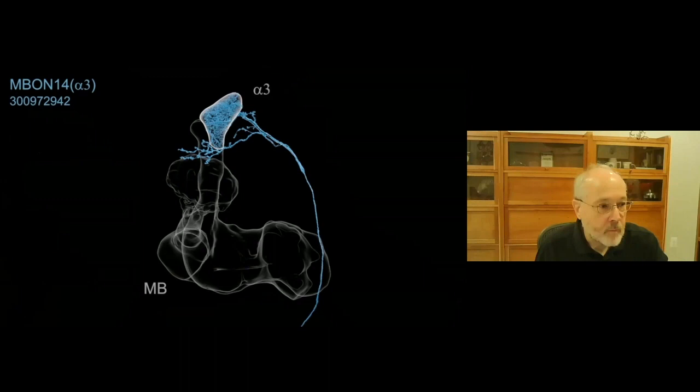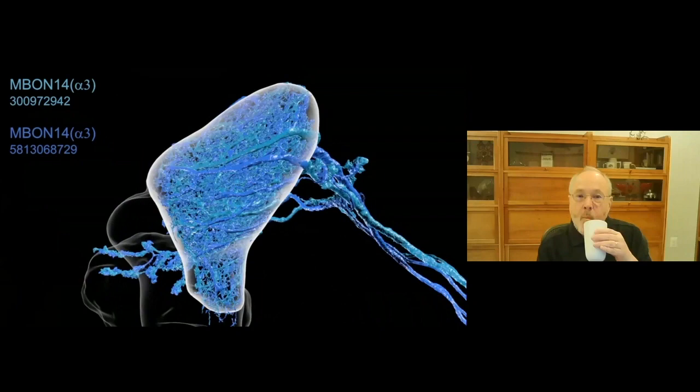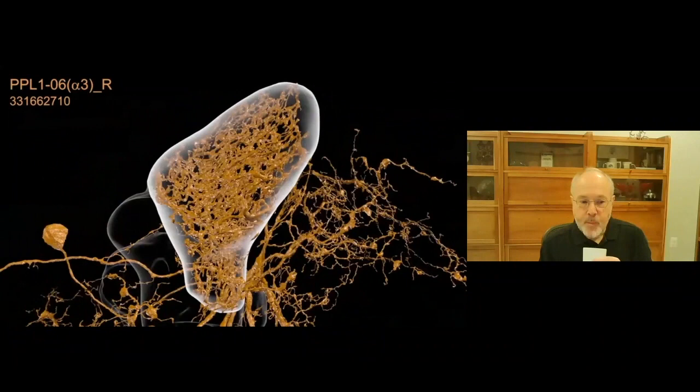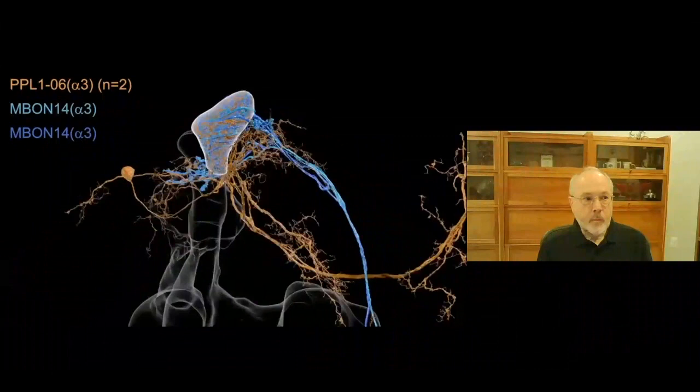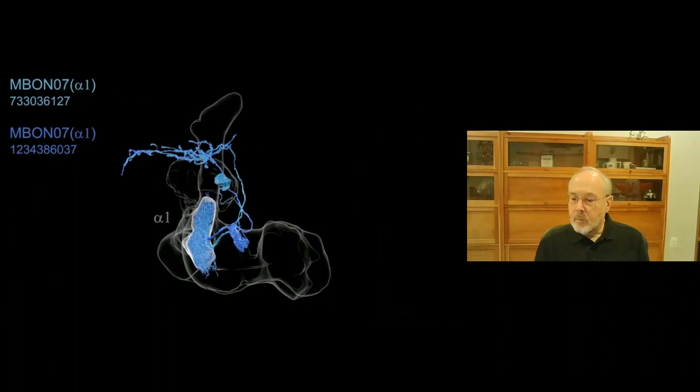Now I'm going to show you the second video which illustrates the compartments that are formed by dopaminergic and output neurons. The dendrites of each of the two MBON14s define the alpha 3 compartment as each of their arbors densely fill the compartment. Similarly, each of the axonal arbors of the two PPL106 dopaminergic neurons fill the same compartment. Here we show the arbors of the two MBONs and two DANs together. Note how they define the same space, the alpha 3 compartment.